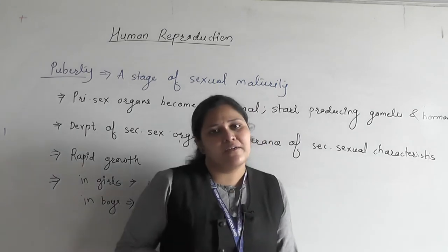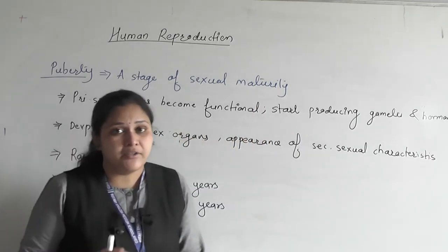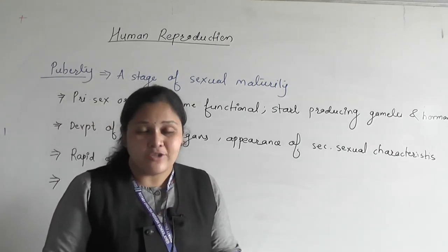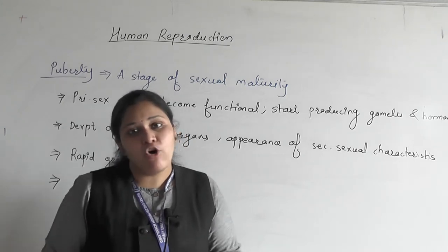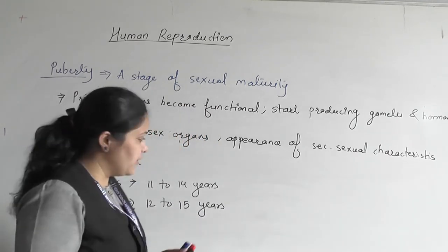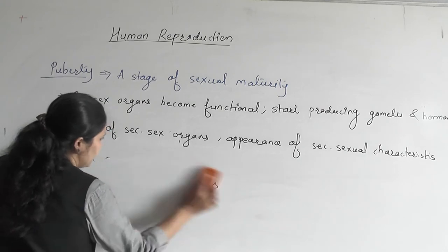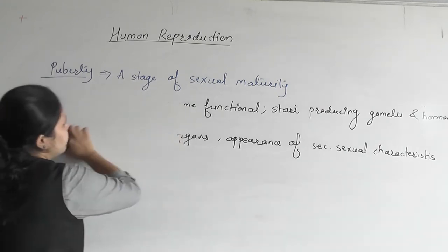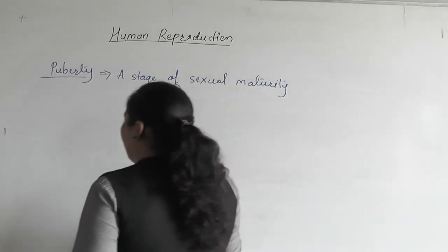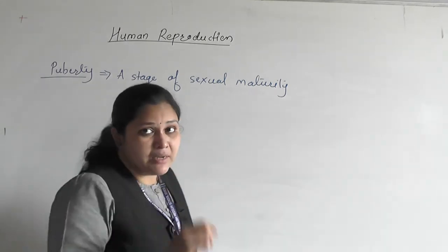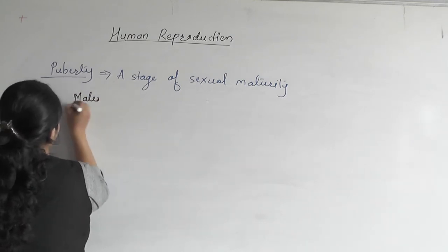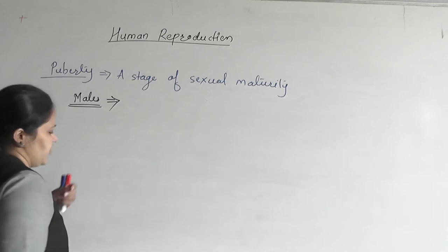The development of secondary sexual characteristics is obviously under the influence of hormones — testosterone as a male hormone and estrogen as a female hormone. Now let's see which are those secondary sexual characteristics that develop at puberty in boys and girls, which help in distinguishing males and females externally.